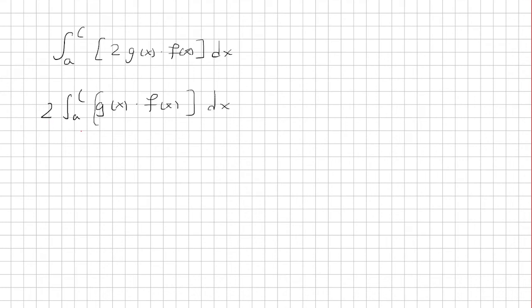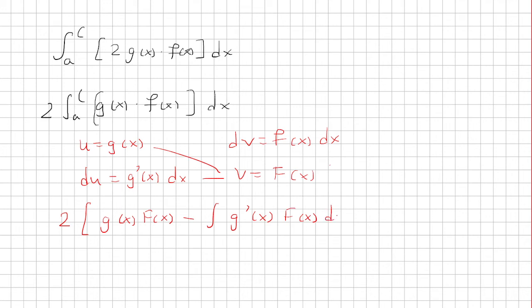So, we'll let u equals g of x, du will be g prime of x dx, dv will be f of x dx, and the antiderivative will be capital F of x. So, then we'll have twice uv, which is g of x times capital F of x, minus integral g prime of x times capital F of x dx. And this integral will go from a to c, and then this one we would have to evaluate from a to c.